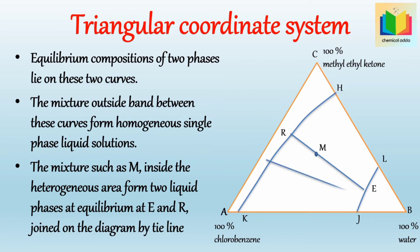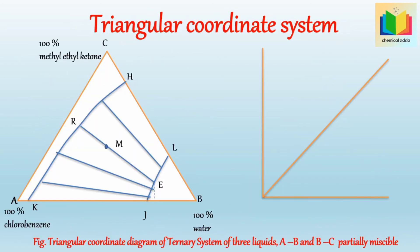There are infinite numbers of tie lines in the two-phase region, which may be rarely parallel and usually change their slope in one direction. Now we will see how the distribution diagram is drawn, where the point lies above or below the diagonal where Y equals X.